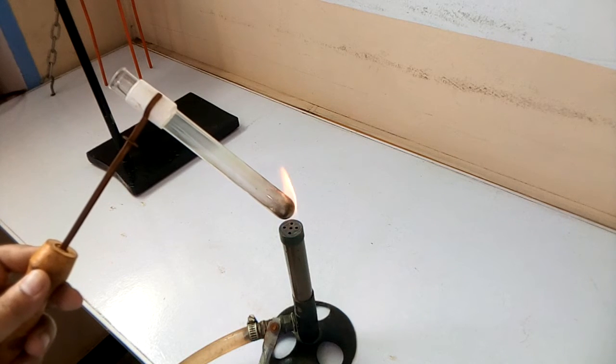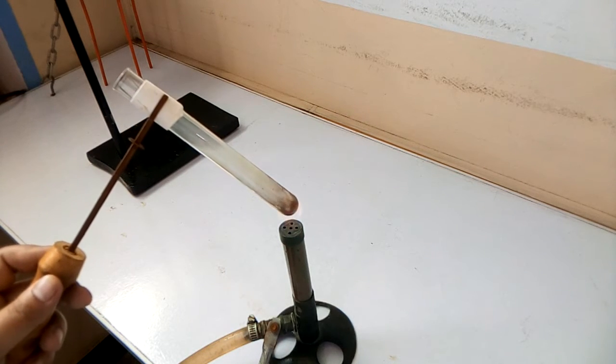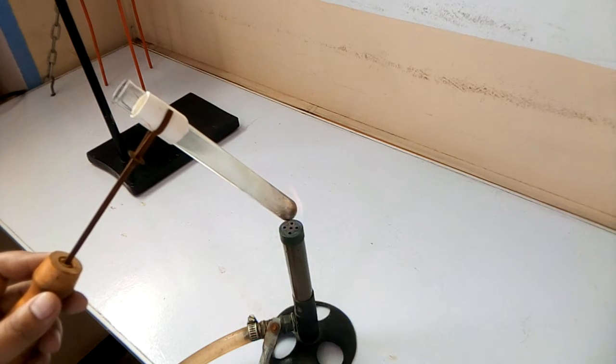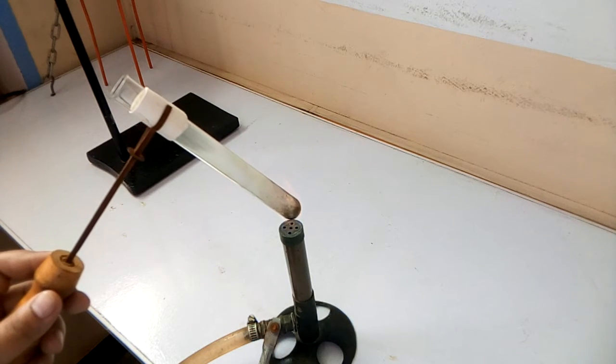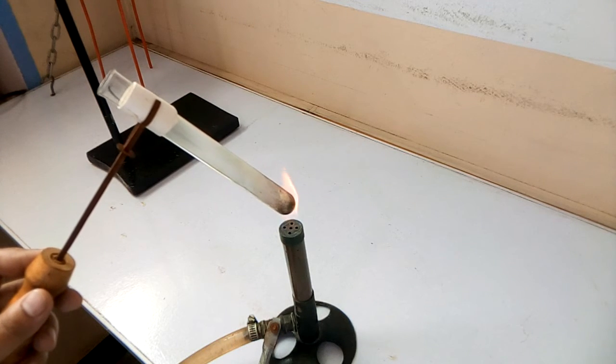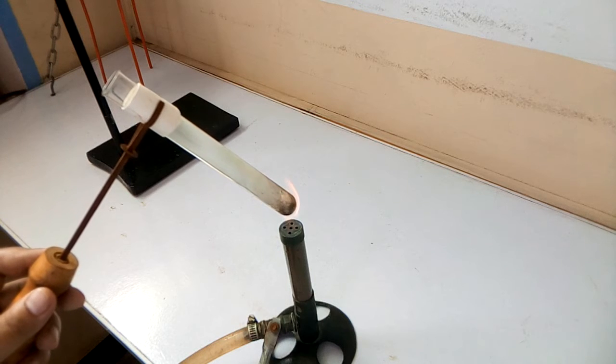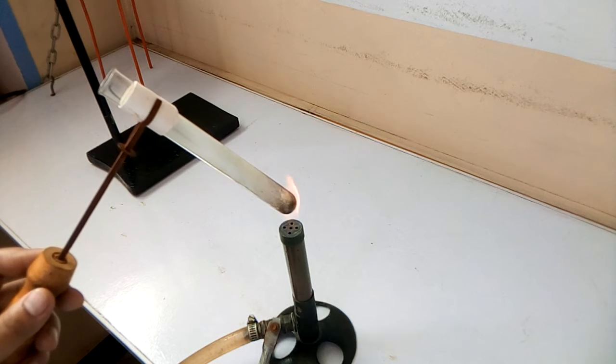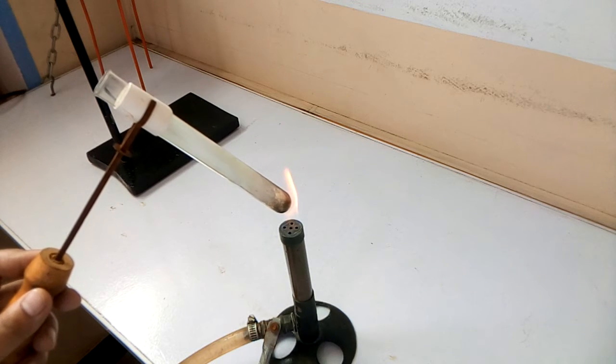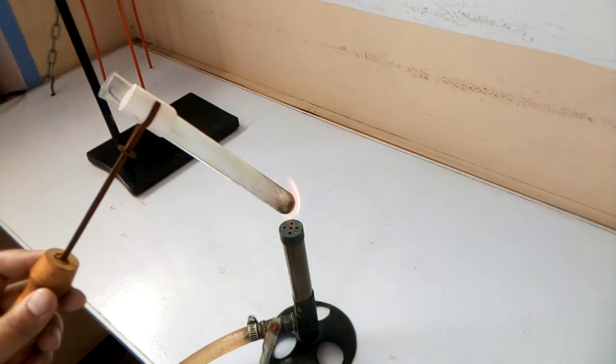White fumes can be observed inside the test tube which are showing that ammonium chlorite is a solid chemical compound which has the ability to sublime. It changes directly to vapors on heating and the vapors on cooling change to solid without passing through the liquid state.